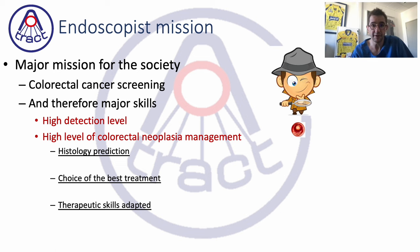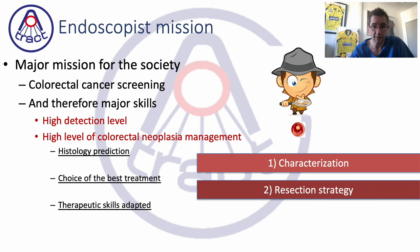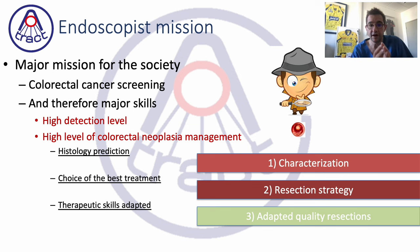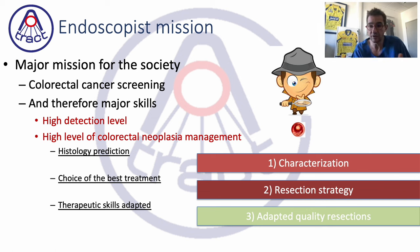Once a lesion is detected, we should have a high level of colorectal neoplasia management: being able to predict histology through characterization, choose the right resection strategy, and have the good therapeutic skills adapted to your practice. If you remove only lesions under 20 mm, you should be very good at cold snaring. For lesions between 20 and 35 mm, you should know underwater EMR, R0 EMR, anchoring EMR, or tipping EMR.